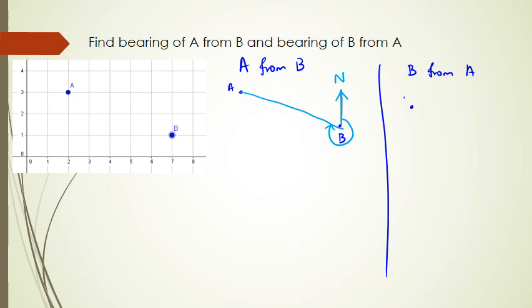But if we look at bearing of B from A, then A is going to be there, B is going to be there, but because it's from A, our north is going to be here and the bearing is going to look like that. I'd like you to see the two differences. So now what I'm going to do is actually work out the angles.